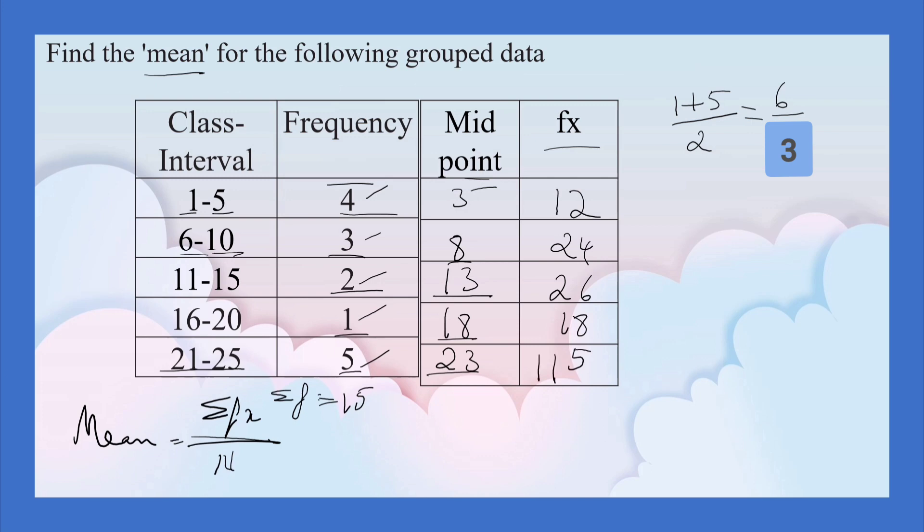We have to add all these things to get sigma f x. 2 plus 4, 6. 6 plus 6, 12. 12 plus 8, 20. 25. Carry 2. Here 3. 3 plus 2, 5. 5 plus 2, 7. 1, 8. 8 plus 1, 9. 195.